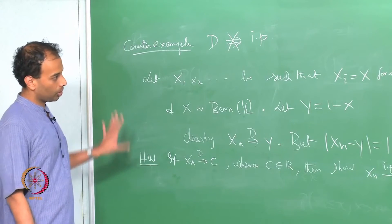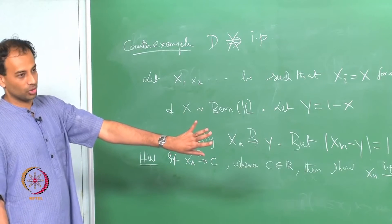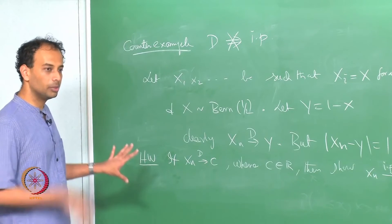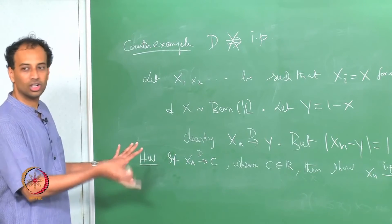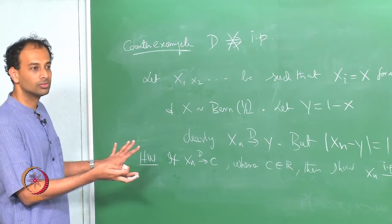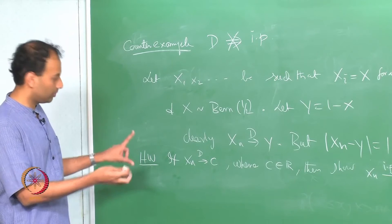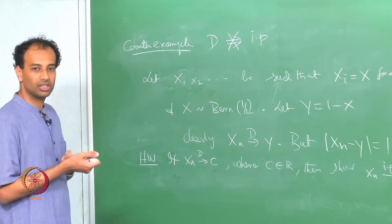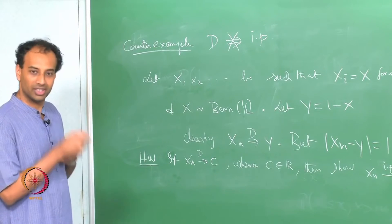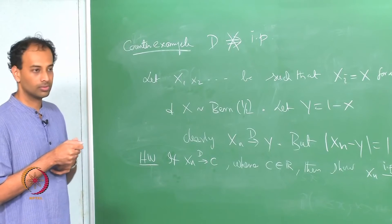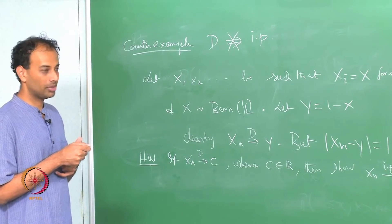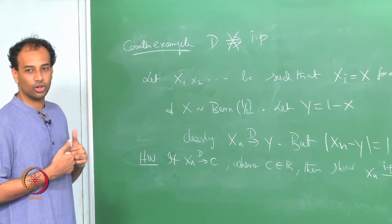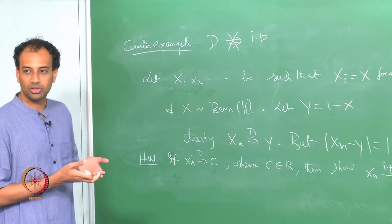So convergence in probability always implies convergence in distribution. The converse is true only when the limit is a constant random variable. When the limit is constant they are equivalent, but generally speaking convergence in probability is strictly stronger than convergence in distribution.